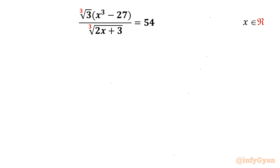Welcome back to Infigyan, my dear friends. In this video we are going to take up one very interesting problem: a radical equation challenge with cube roots. The equation is cube root of (3x³ - 27) over cube root of (2x + 3) equals 54. We have to find out all real solutions.